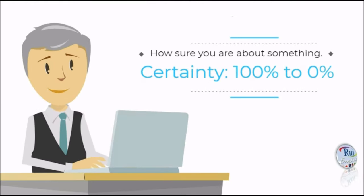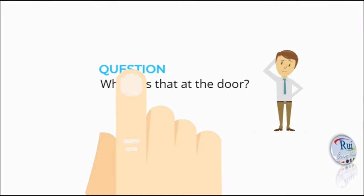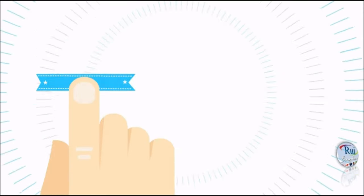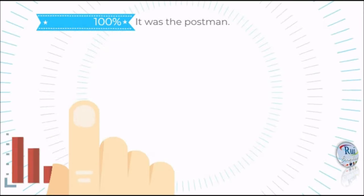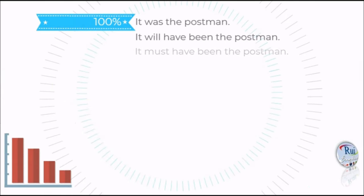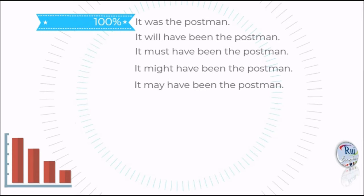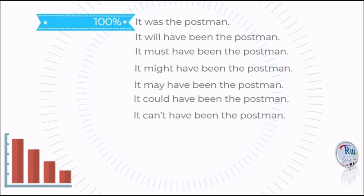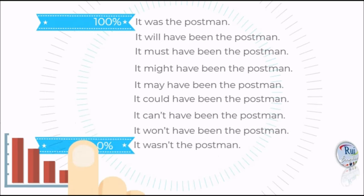Certainty: 100% to 0%. Who was that at the door? 100%: It was the postman. It will have been the postman. It must have been the postman. It might have been the postman. It may have been the postman. It could have been the postman. It can't have been the postman. It won't have been the postman. 0%: It wasn't the postman.